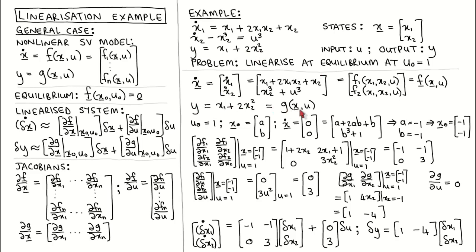The next step is to calculate the equilibrium. An equilibrium is defined as a combination of states and input. However, we are only given the input at the equilibrium, so we have to calculate the states at the equilibrium. To do this, we call the states at the equilibrium a and b. We then use the definition of the equilibrium and combine that with our nonlinear state equation to solve for a and b, which gives us the state vector at the equilibrium as minus 1 and minus 1.